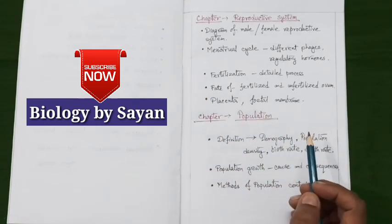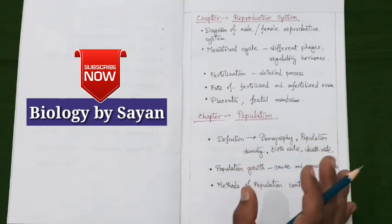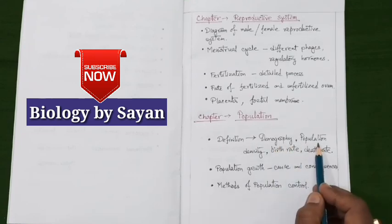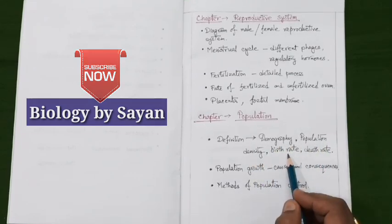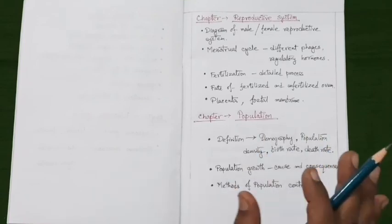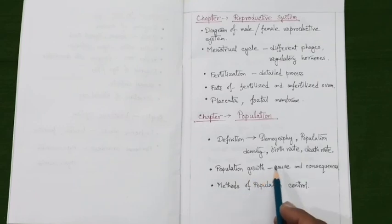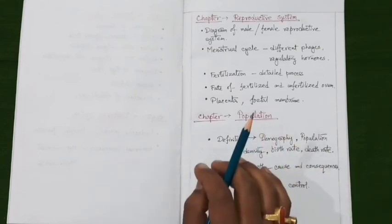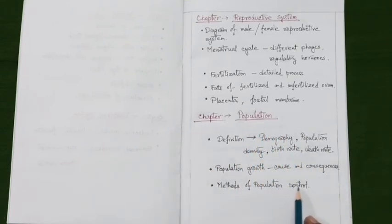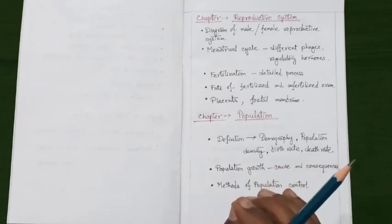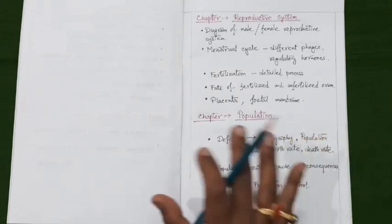Now let's discuss the chapter on population. Important definitions are very important for exam purposes — definitions like demography, population, population density, birth rate, death rate, and others, completed with examples. Next, study population growth and know its causes and consequences. The last topic under this chapter is methods of population control. Study all these sections and also prepare a note on family planning, which is very important for exam purposes.